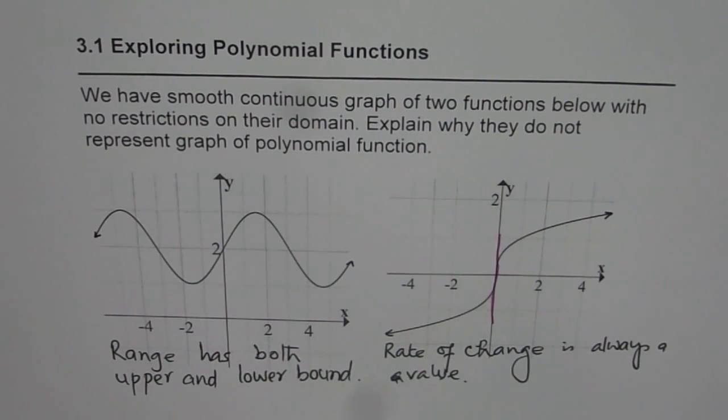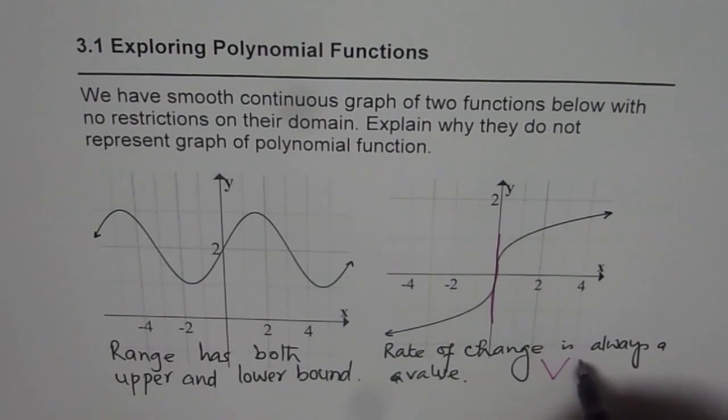Do you see that? When we say that the polynomial is a smooth and continuous curve, we actually also say that it does not have corners or cusps. Why? Because at corners and cusps, you do not know which tangent we are talking about. Or in this case, we have a vertical tangent.